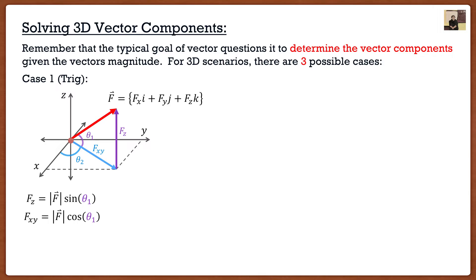Well these can be obtained by using the second angle theta two and creating another triangle. I can go fx in the x direction and fy in the y direction and it forms another triangle with fxy. In this case my fx is going to be fxy times cosine of theta two and my fy is going to be fxy times sine of theta two.